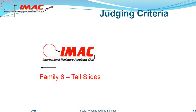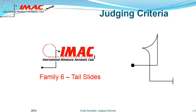This is a Rusty Family 6, Tail Slides. Tail Slides share many of the same line criteria as Family 5 figures. The main differences are found at the top of the lines. We'll briefly mention the line judging criteria and concentrate on the slide portion. Tail Slides are a deceptively challenging family to fly and judge.